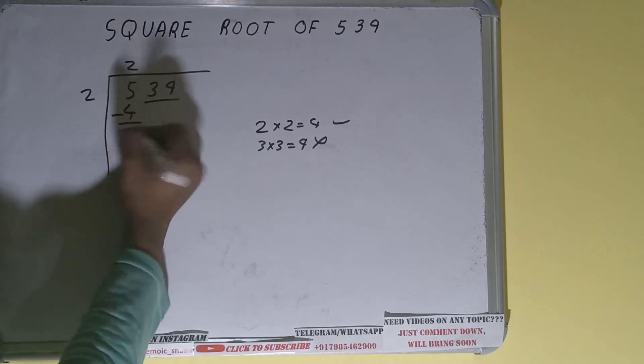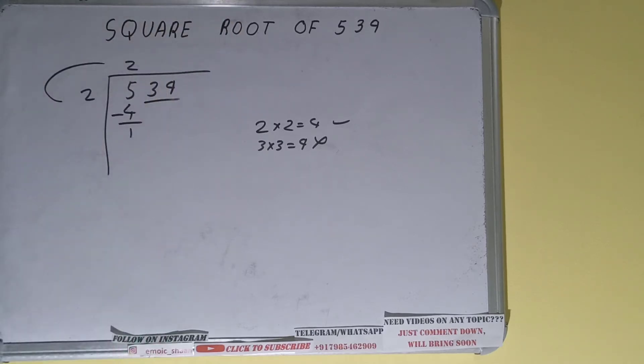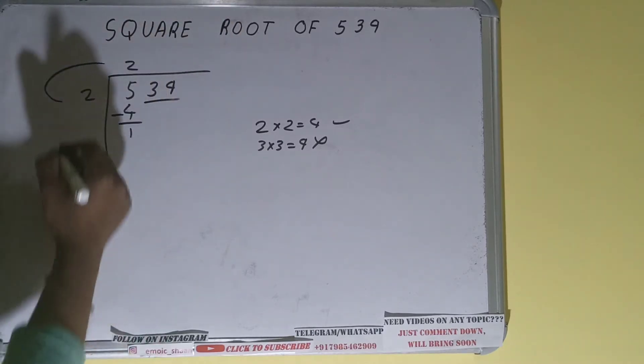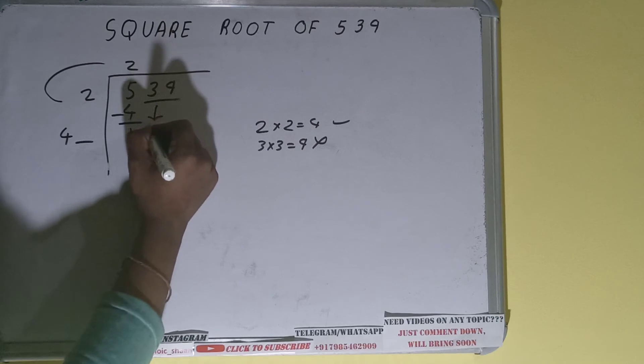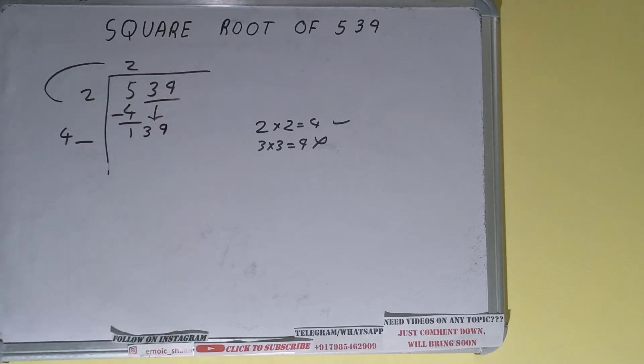...will give four. Subtract and one will be left. Now we did two into two, so do two plus two, it will be four, and keep one digit extra. And this number we need to make it big, so bring the next pair down and it will become as 139. Now whatever number we write here we have...